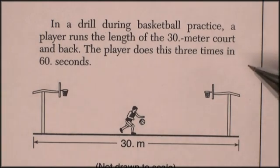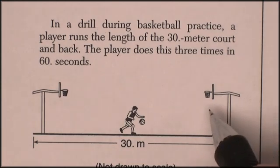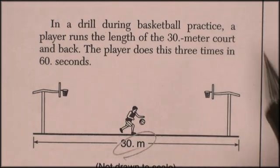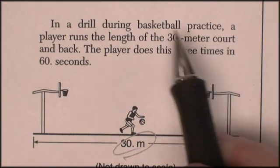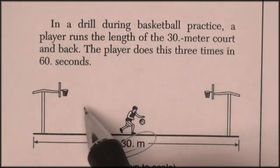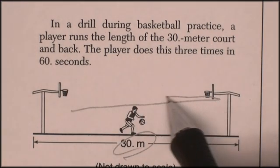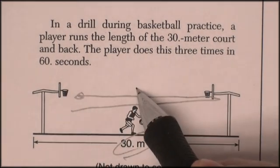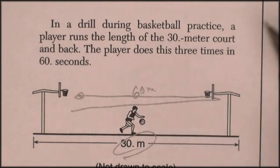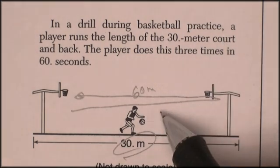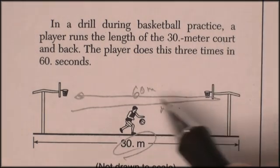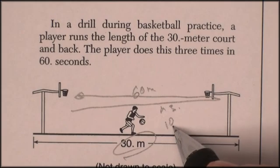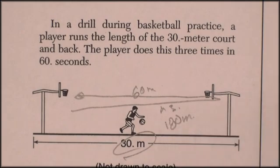I want to refer to this picture. In a drill during basketball practice, a player runs the length of a 30-meter court. He runs the length and back. So he goes 30 and then back. That's a total of 60 meters. The player does it three times. Times three. So that's 180 meters. And he does it in 60 seconds.